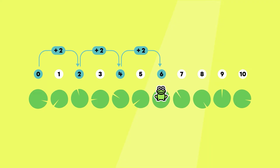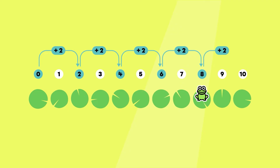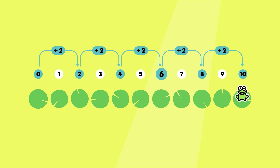I can continue. Six plus two equals eight. And eight plus two equals ten. Let's name the numbers on which the frog landed: zero, two, four, six, eight, and ten. That's it! We are skip counting by two in ascending order.